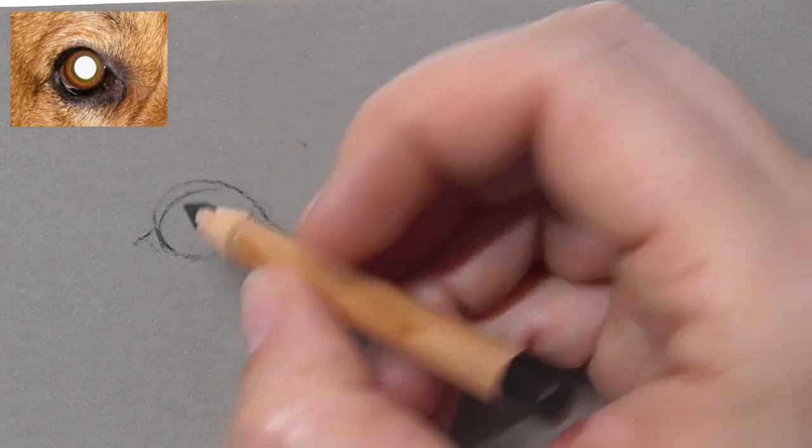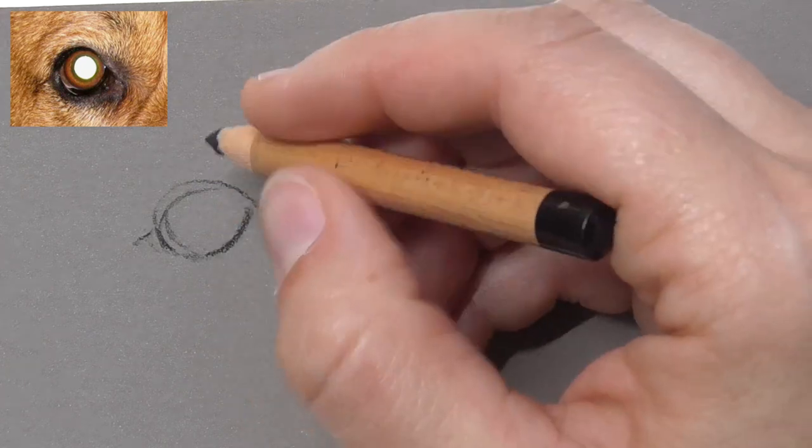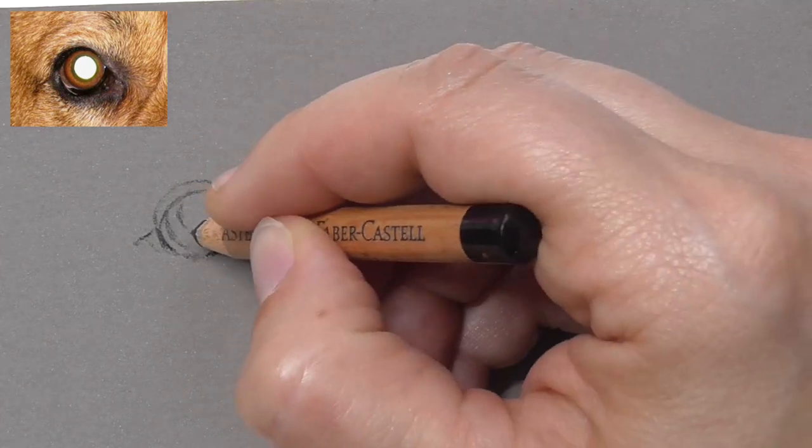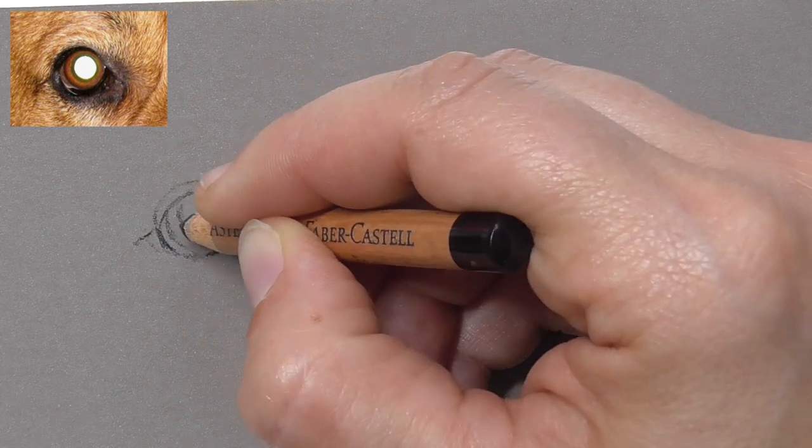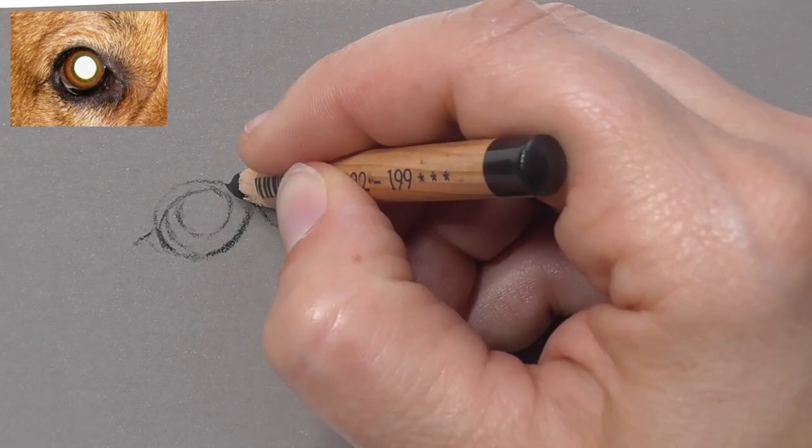So let's start drawing here the outline. Just draw the eyelids here with a black pastel pencil and just sketch in everywhere where the pupil should be.